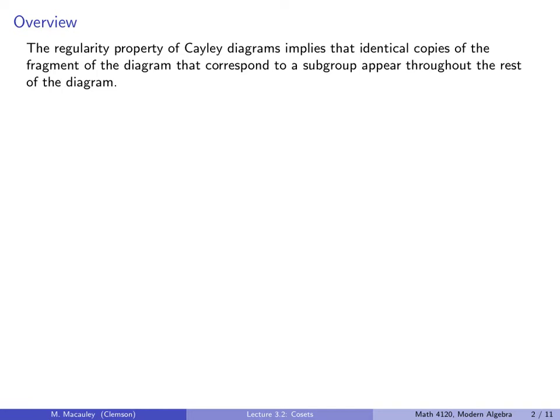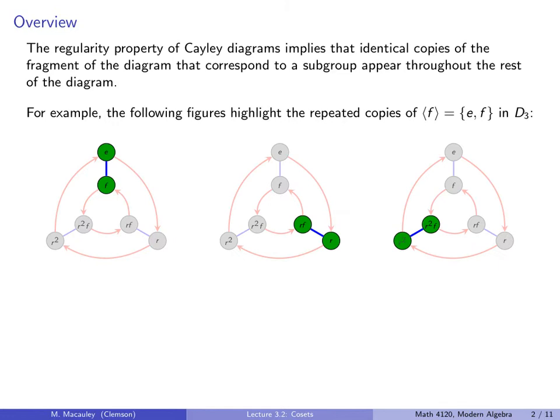Welcome to lecture 3.2: Cosets. Before we begin, I want to give you an idea visually as to what cosets are. The regularity property of Cayley diagrams implies that identical copies of the fragment of the diagram corresponding to a subgroup appear throughout the rest of the diagram.